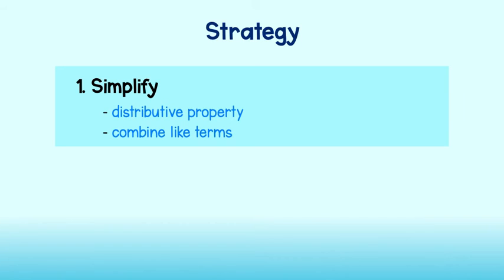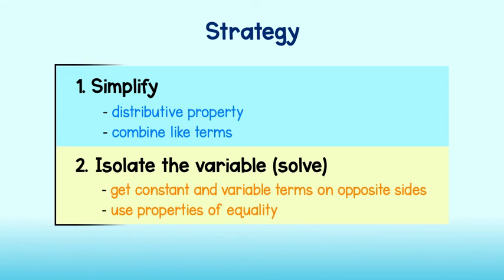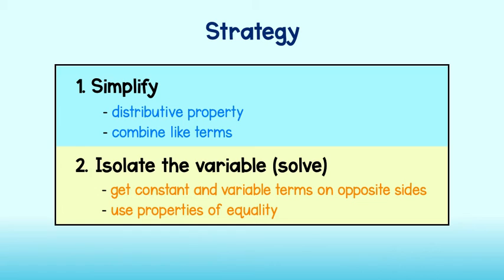In general, there are two rules we can follow when solving a multi-step equation. First, simplify. Many problems start out complex, so you will want to use the distributive property and then combine like terms as necessary. Second, you will work to isolate the variable or solve the equation. If necessary, get the constant and variable terms on opposite sides, then solve by using the properties of equality.